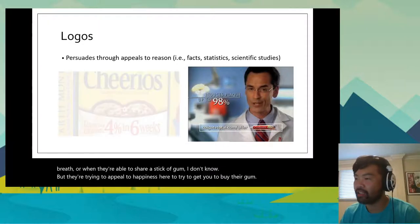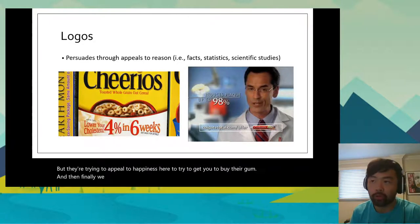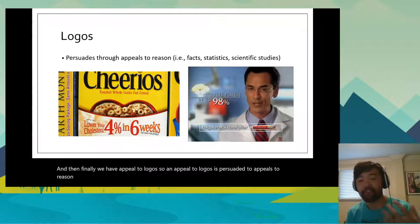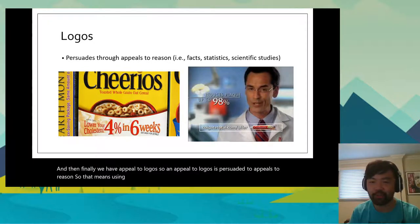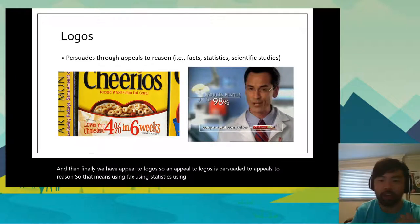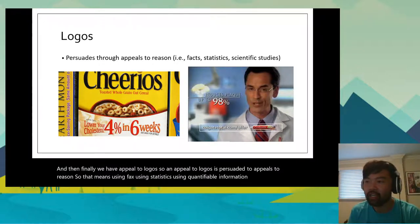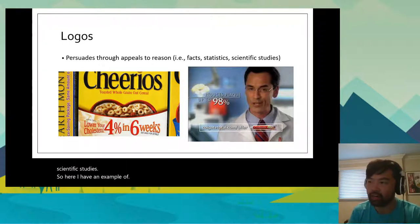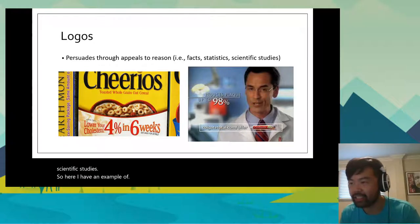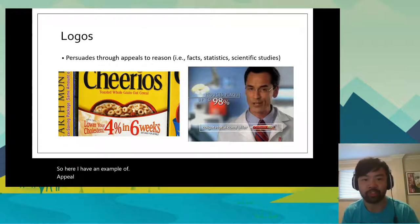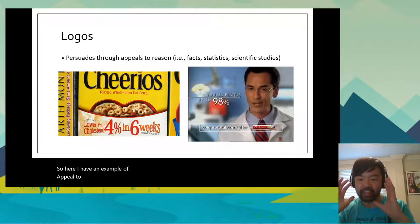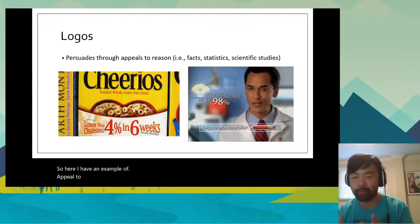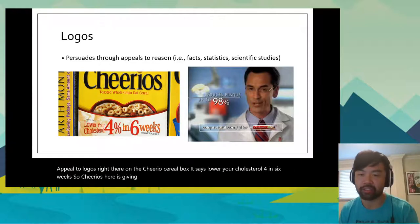And then we have appeal to logos. An appeal to logos persuades through appeals to reason — that means using facts, statistics, quantifiable information, numbers, and scientific studies. For example, on the Cheerios cereal box it says 'lower your cholesterol 4% in six weeks.' Cheerios is giving you health benefits through numbers to show you exactly how much you can lower your cholesterol, making you more likely to buy the product.